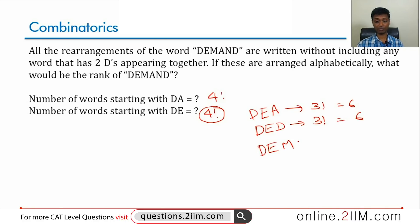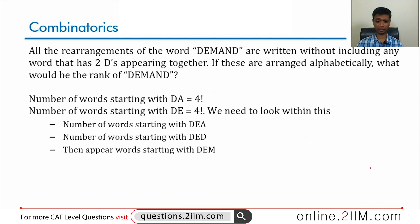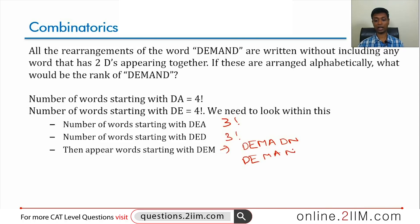With D-E-M, we rearrange A and D — three factorial words. But what we are looking for is within this set, so we dig deeper. With D-E-M, the next letter is A, giving D-E-M-A. The first word is D-E-M-A-D-N, and the second word is D-E-M-A-N-D. That is the word we are looking for — DEMAND is the second word within D-E-M-A.